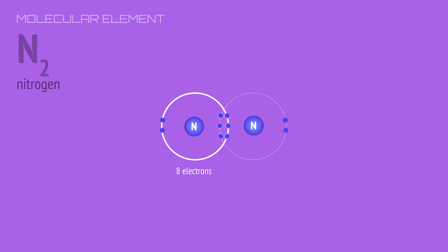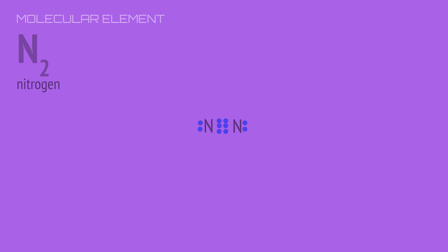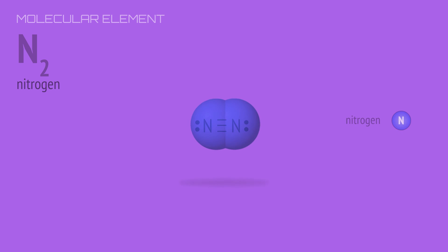Each nitrogen atom has a full eight valence electrons because both atoms share the six bonding electrons. In the Lewis diagram, we can show each pair of shared electrons as a line, and together the three lines represent a triple covalent bond. This bond is even stronger and shorter than a double bond, and so the nitrogen molecule is held together extremely tightly.